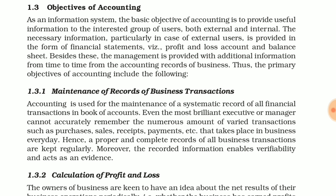The necessary information, particularly in the case of external users, is provided in the form of financial statements, which include the profit and loss account and balance sheet. Besides these, management is provided with additional information from time to time from the accounting records of business. Thus the primary objectives of accounting include the following.